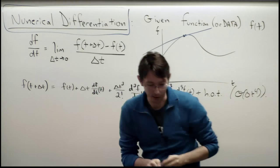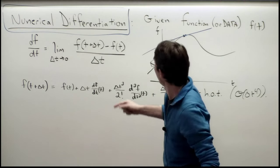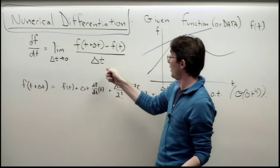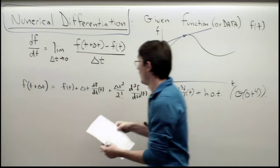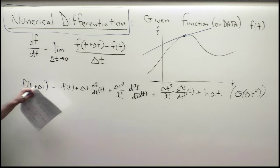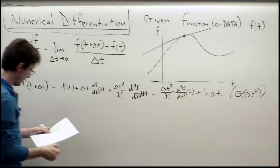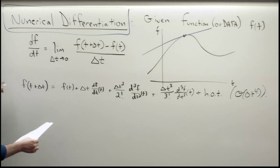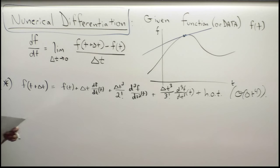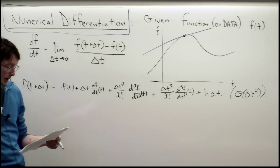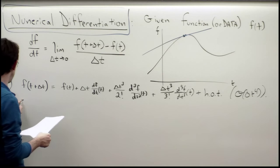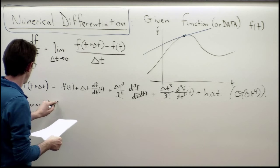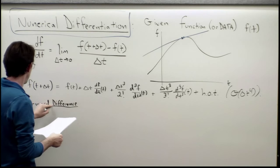Recall that we're approximating the derivative using the definition of the derivative for a finite delta t. We're going to Taylor expand f(t + delta t) — let's call this the star equation — and use it to analyze our approximation schemes.